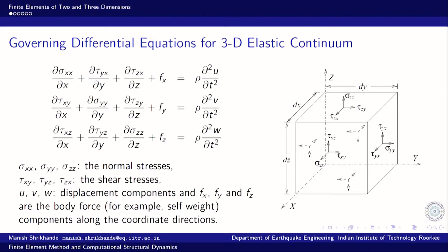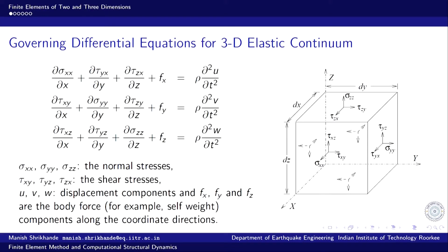Here, u is the displacement along x, v is the displacement along y, and w is the displacement along z. The term del²u/dt² is the acceleration; rho is the density, so rho·dx·dy·dz is the mass of the infinitesimal volume, and multiplied by the acceleration gives the rate of change of momentum, assuming the mass of the body is invariant. That is the basic governing differential equation.